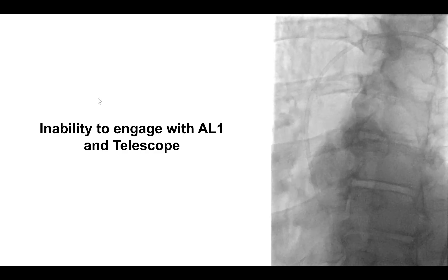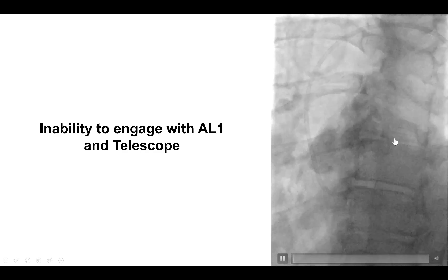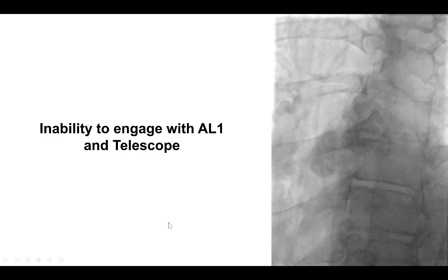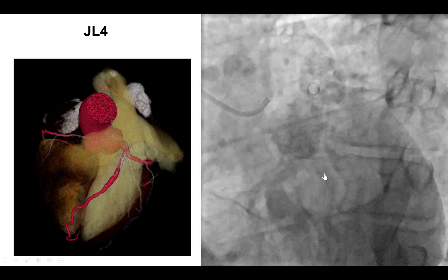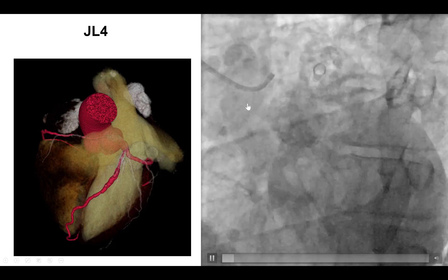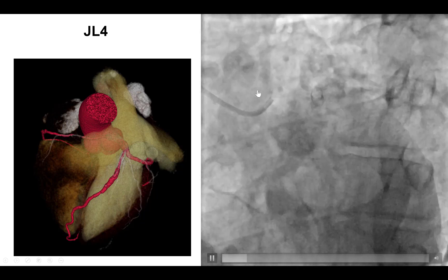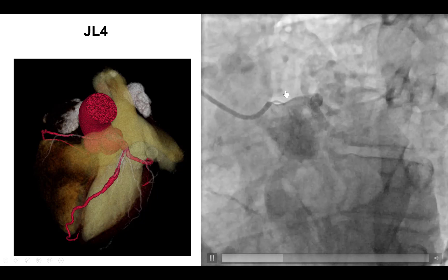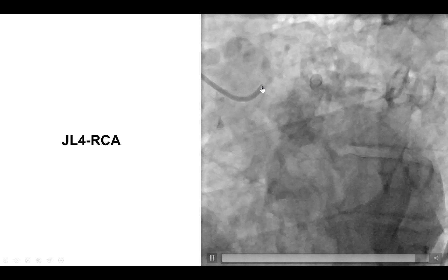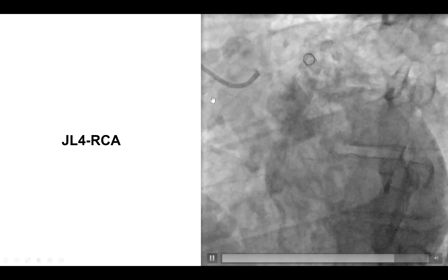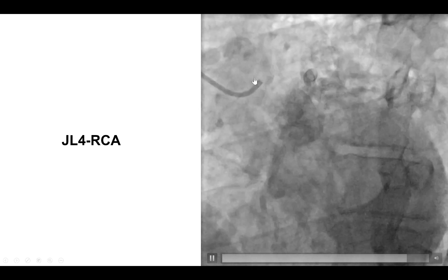The most important difficulty in this patient was to engage that anomalous coronary. We first tried with an AL1 guide catheter together with the guide extension, but unfortunately the guide extension kept entering into the left main and would not go into the anomalous right coronary artery. After trying several times, we changed to a JL4 guide catheter, which helped visualize for the first time the origin of the right coronary artery, literally very close to the takeoff of the left main. However, selective engagement was not feasible, and in cases like this, one way to perform PCI is to wire the vessel and use the wire as a rail to help with engagement of the guide catheter.